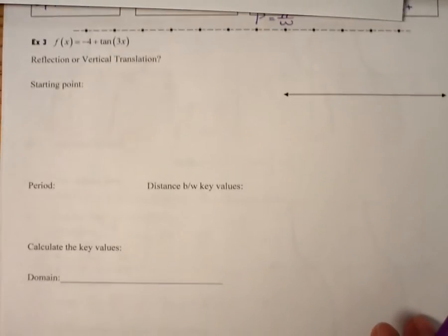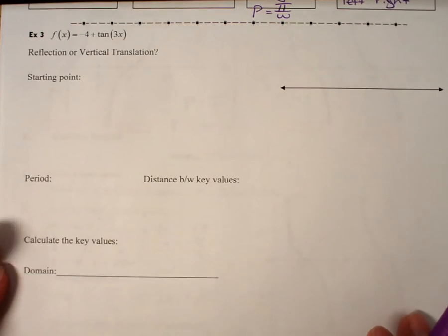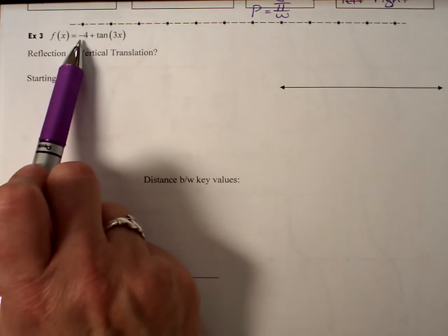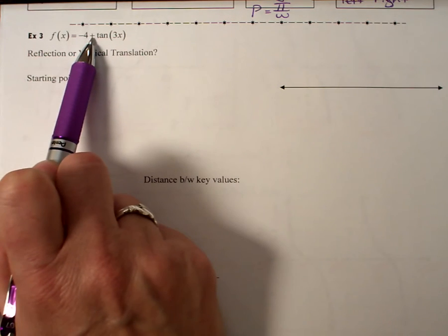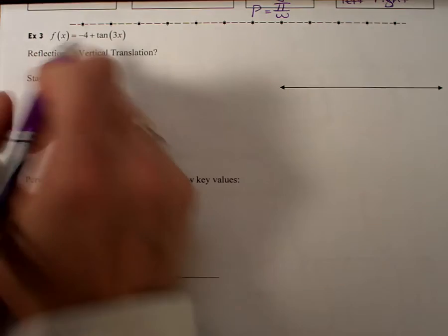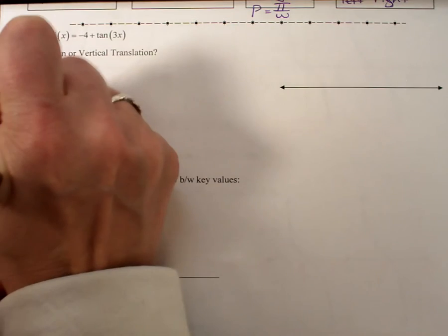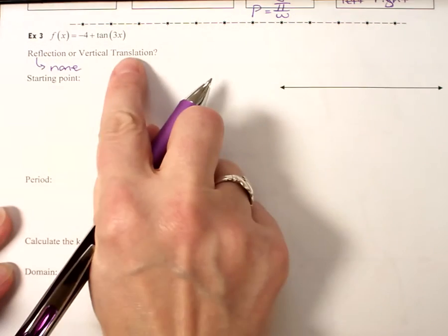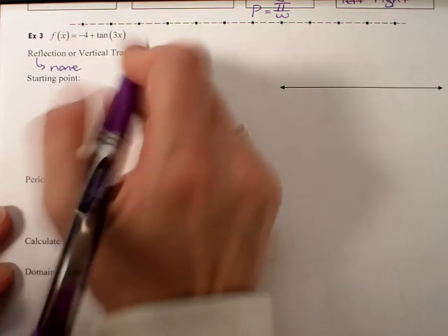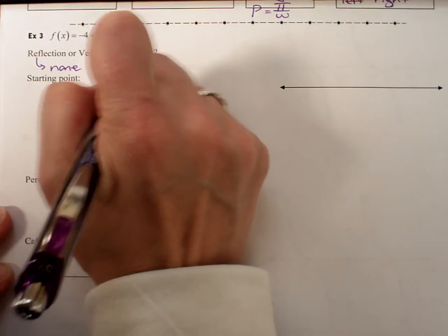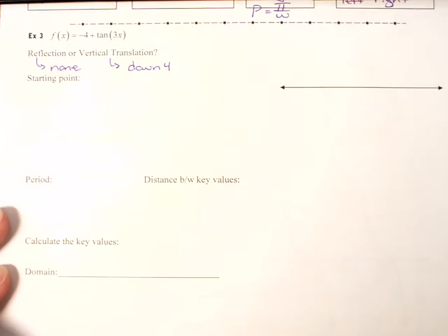So jumping into one of our examples, we can find our various values. This graph does not have a reflection because the sign directly in front of our tangent is positive, so we can say reflection is none. It does have a vertical translation. I'm going to grab that negative 4, and I'm going to say that it was down 4.